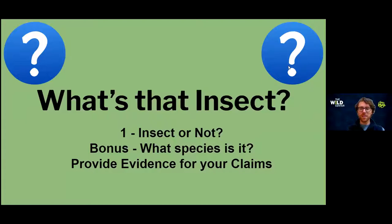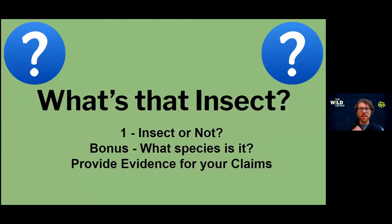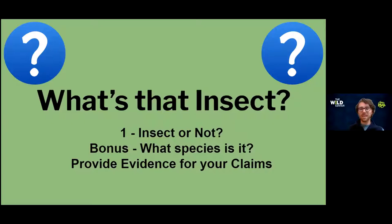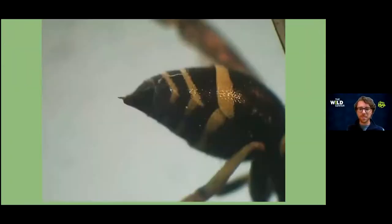Let's get going — we're going to play a quick game called 'What's That Insect.' Your challenge is to figure out if it's an insect or not, and then the bonus is to figure out what species you think it is. What's really important, as it is in science, is that we provide evidence for our claim. Write down whether it's an insect and what evidence you see in the picture that tells you that.